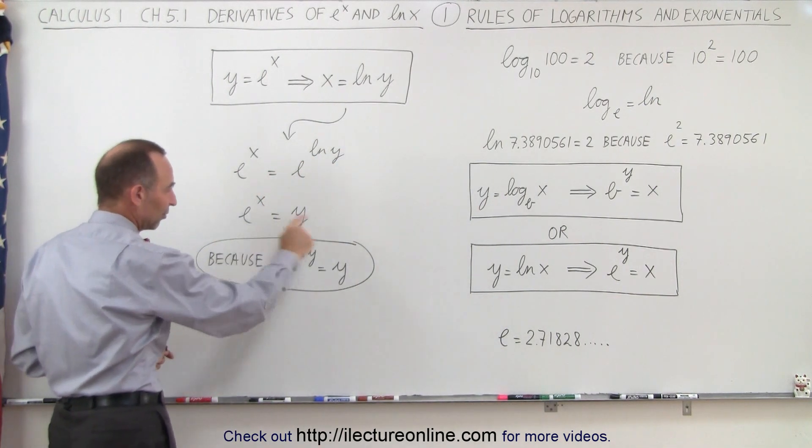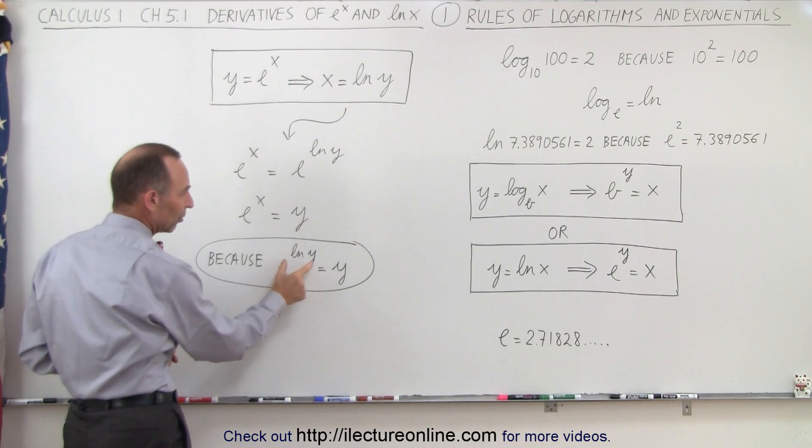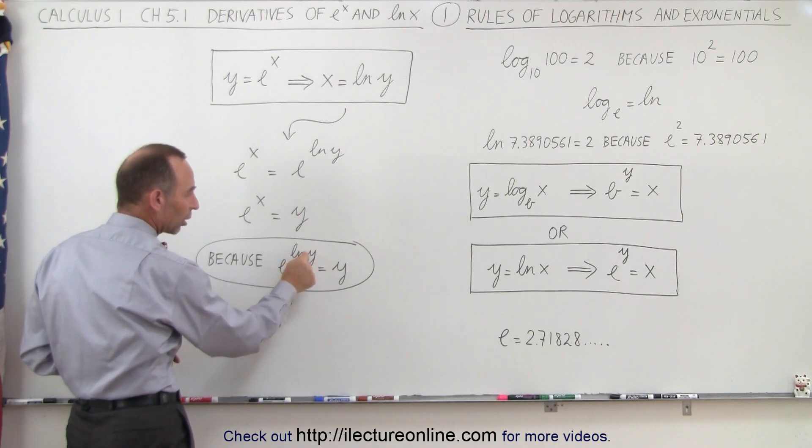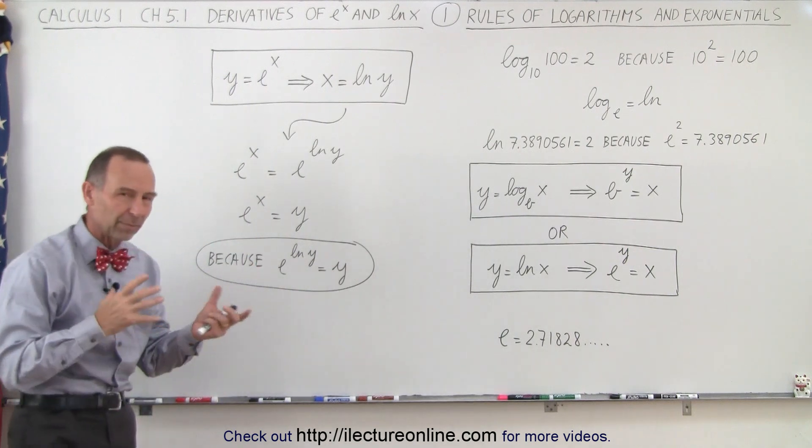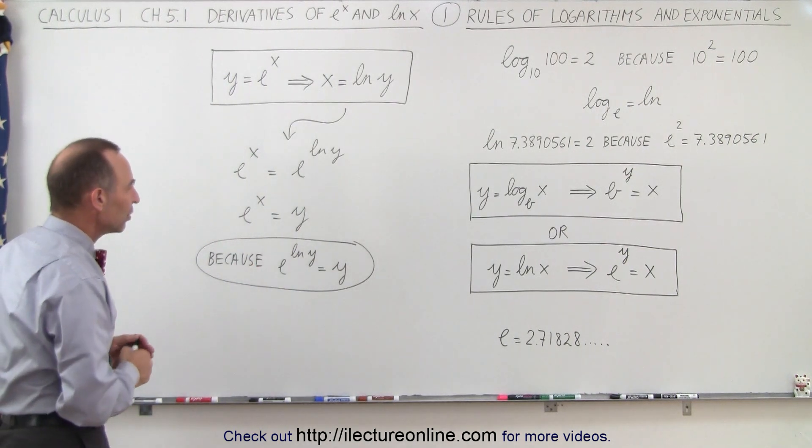So here we have it summarized: e, the natural number, raised to the natural log of something, in this case the natural log of y, gives us y back because the exponential negates the natural logarithm. One basically negates the other.